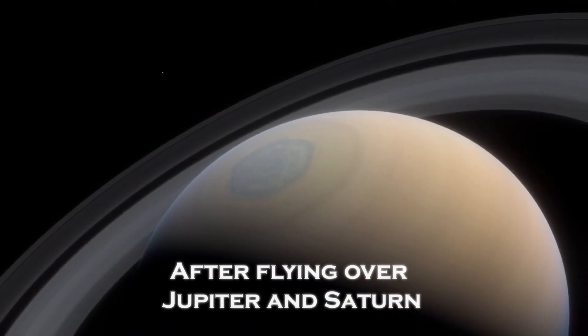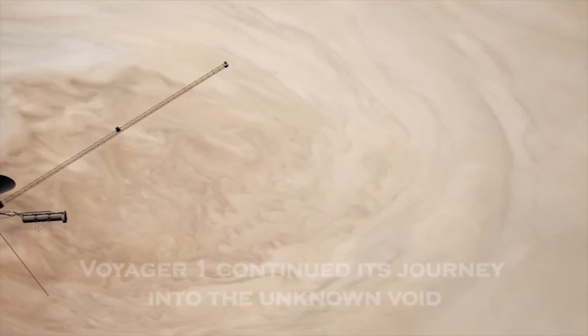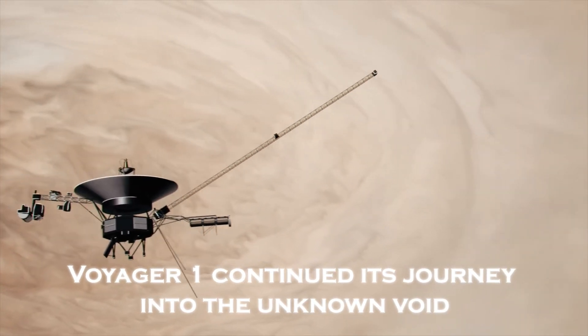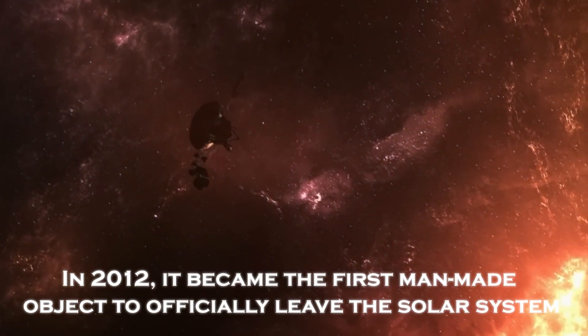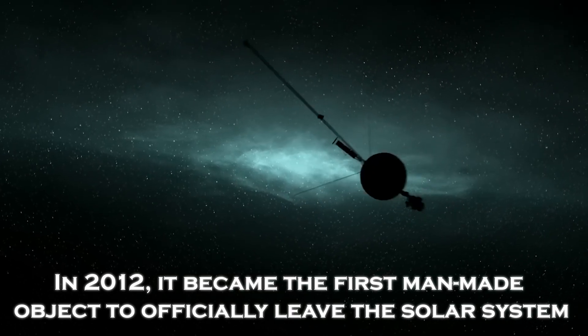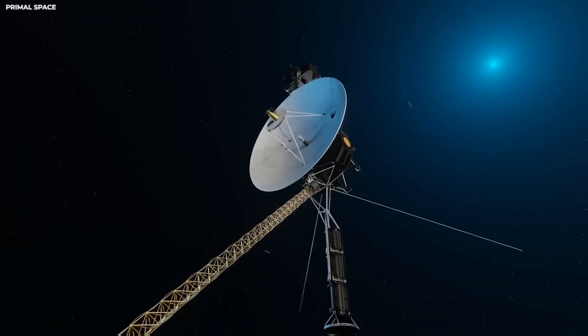After a flyby of Jupiter and Saturn, sending us unprecedented images and data, Voyager 1 continued its journey into the unknown void. In 2012, it became the first man-made object to officially leave the solar system, crossing the heliopause and entering interstellar space.